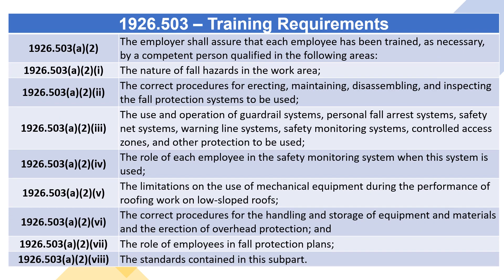1926.503(a)(2) — The employer shall assure that each employee has been trained as necessary by a competent person qualified in the following areas: 1926.503(a)(2)(i) through 1926.503(a)(2)(viii) — the nature of fall hazards in the work area; the correct procedures for erecting, maintaining, disassembling, and inspecting the fall protection systems to be used; the use and operation of guardrail systems, personal fall arrest systems, safety net systems, warning line systems, safety monitoring systems, controlled access zones, and other protection to be used.